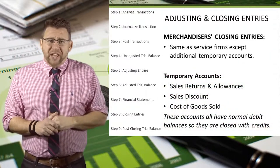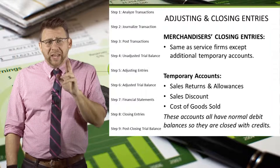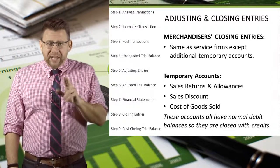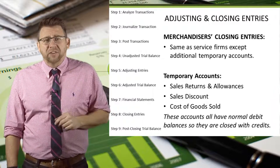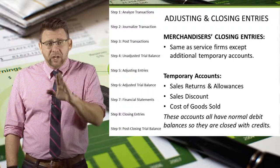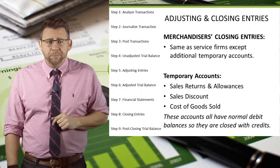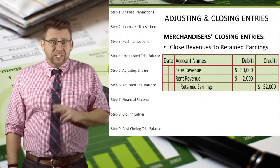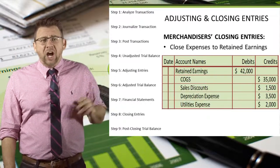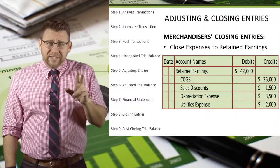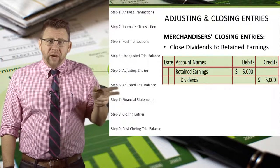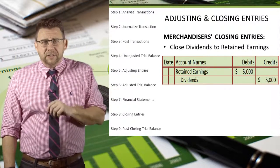The closing entries for merchandisers are the same as those for service firms, except that we have some new temporary accounts that must be included in the closing process. Since sales returns and allowances, sales discounts, and cost of goods sold all have normal debit balances, they get closed with credits and are included in the expenses closing entry. Revenues get closed with debits to the revenue accounts and credits to retained earnings. Expenses and contra accounts get closed with credits, and retained earnings is debited. Finally, dividends is closed with a credit and a debit to retained earnings.